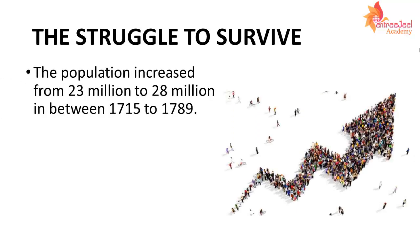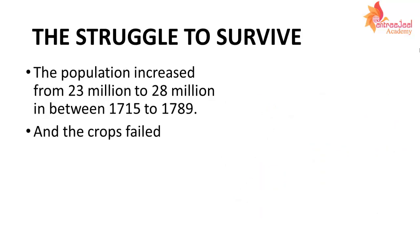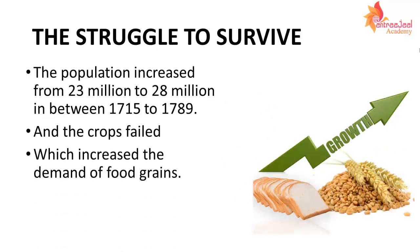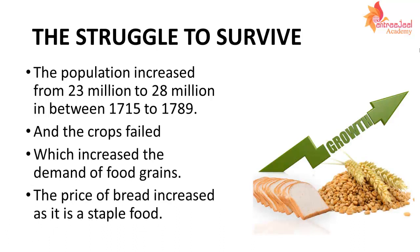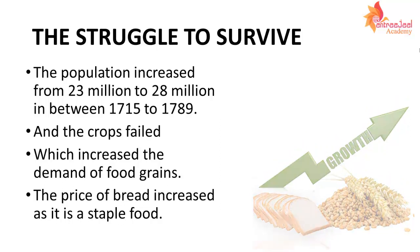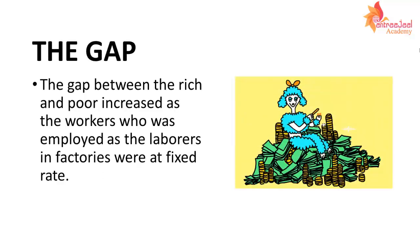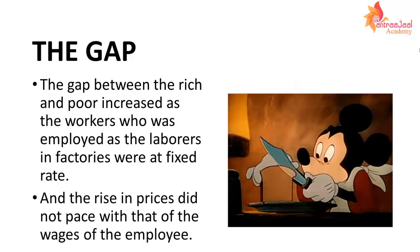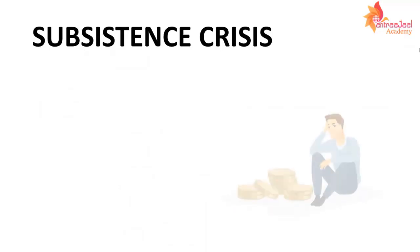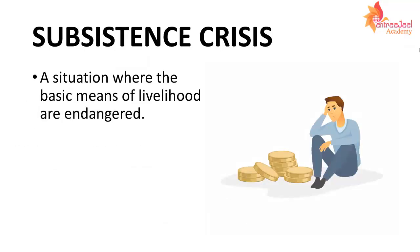अब हम बात करेंगे struggle की। France में जब debt आया, उसके पहले population काफी बढ़ चुकी थी। और उसी साल crop failure भी हुआ था। तो food grains की demand बढ़ गई और France के लोगों को staple food — bread — खाने पर मजबूर होना पड़ा। अमीर लोग bread afford कर सकते थे, तो जो अमीर थे वो और अमीर होते गए और जो गरीब थे वो और गरीब हो गए। Factories के wages में कोई changes नहीं आया, और इसी वजह से subsistence crisis आ गया।